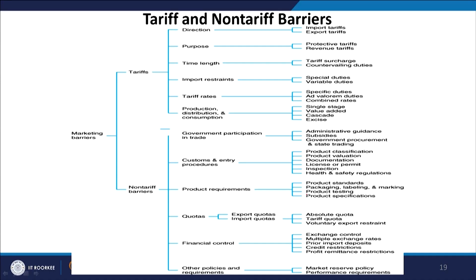This chart shows the various tariffs and non-tariff barriers that the government has. Tariffs directly affect the cost and non-tariff barriers indirectly affect the cost. Tariff barriers come under various dimensions: they can affect the direction, the purpose, the time length; there can be import restrictions, tariff rates, and production, distribution, and consumption.